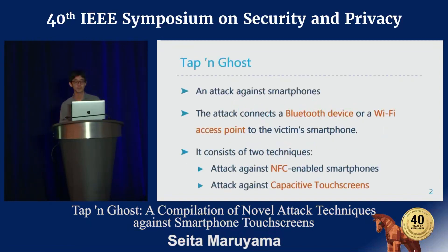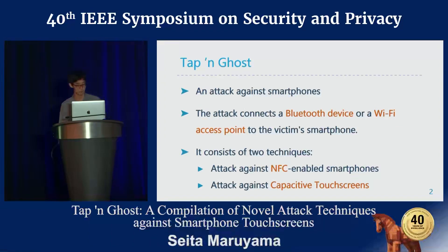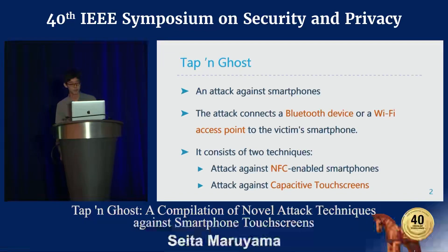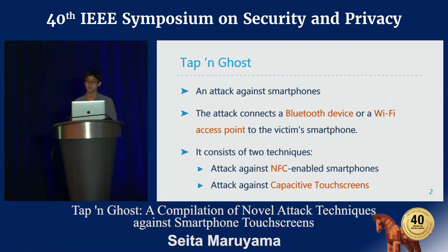Tap and Ghost is an attack against Android smartphones. The attack connects the attacker's Bluetooth device or WiFi access point to the victim's smartphone. This attack consists of two techniques: the first one is an attack against NFC-enabled smartphones, and the other one is an attack against capacitive touch screens of smartphones.